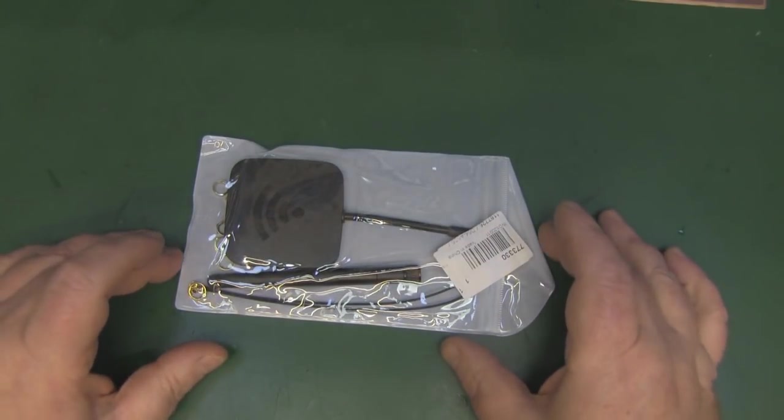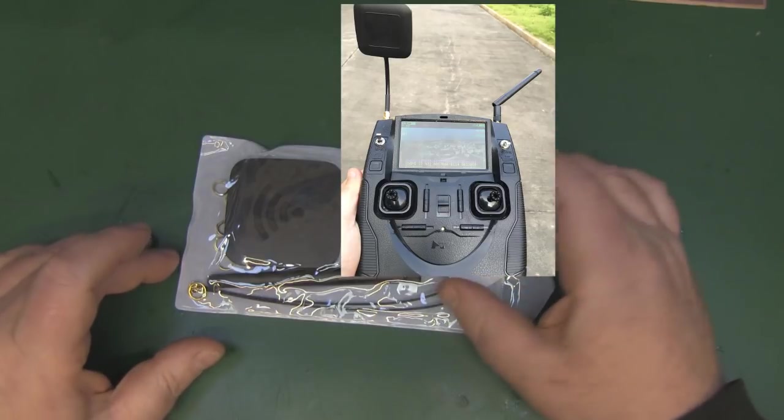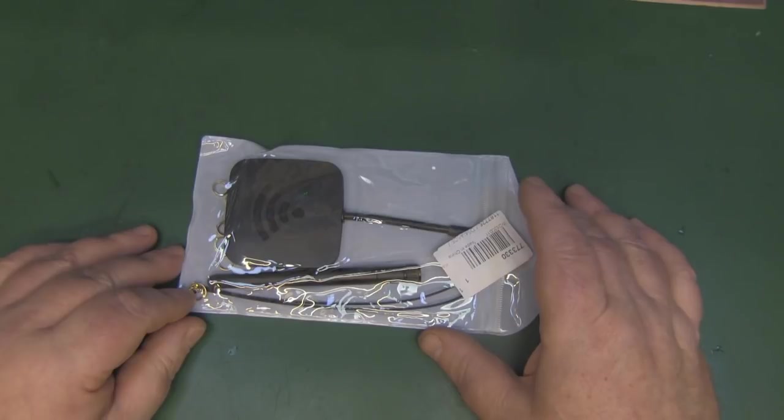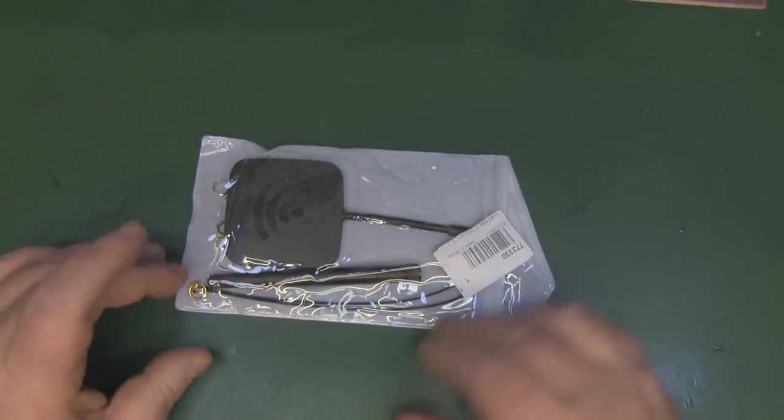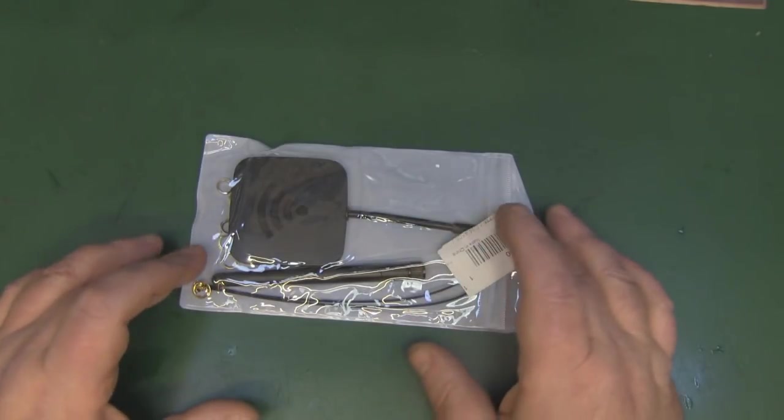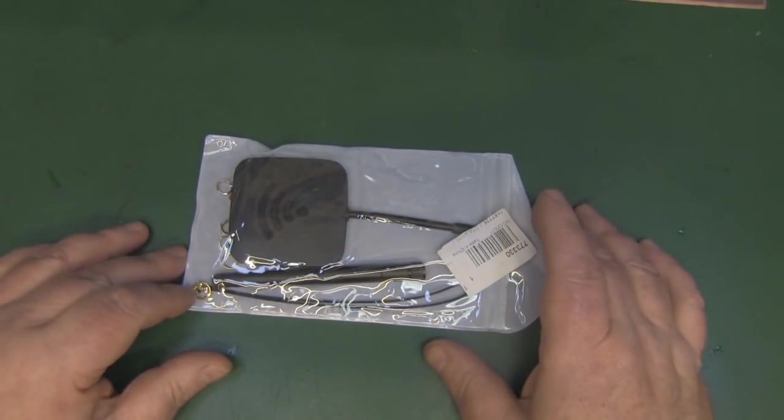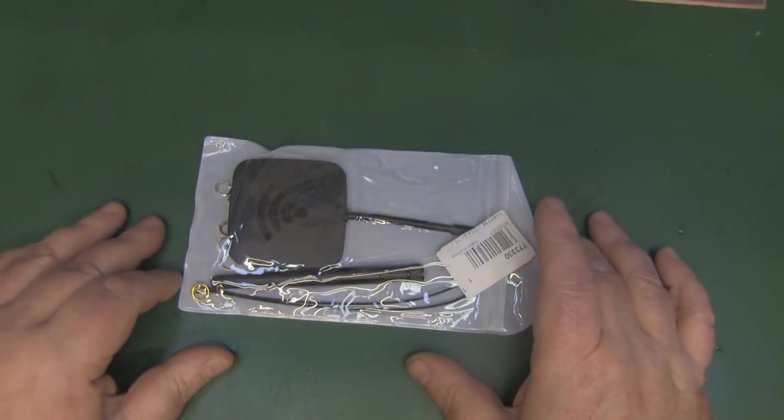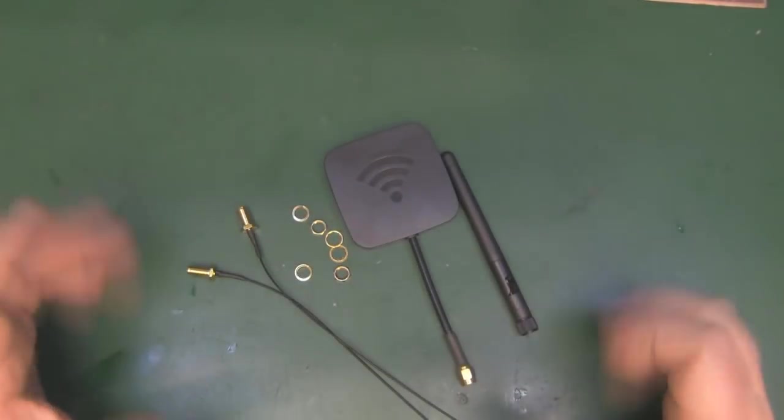This is a kit to upgrade that unit because it doesn't have removable antennas, so there's no way to upgrade them. Basically what they're giving you is a couple of pigtails and two antennas: a panel antenna for the video and a small dipole antenna for the 2.4 gigahertz control unit.